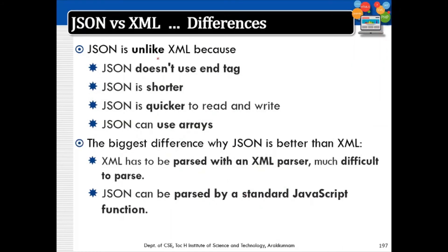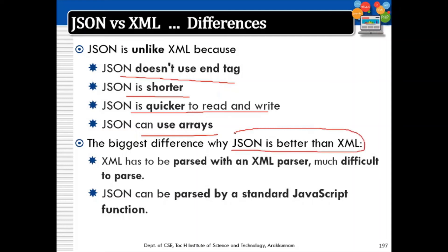These are the differences between JSON and XML. JSON doesn't use end tags. JSON is much shorter than XML and quicker for machines to read. JSON can use arrays, but there is no array concept in XML — that is the biggest difference. JSON is better than XML because XML can only be parsed with an XML parser, which takes more time, while JSON can be parsed by a standard JavaScript function, making it much easier.